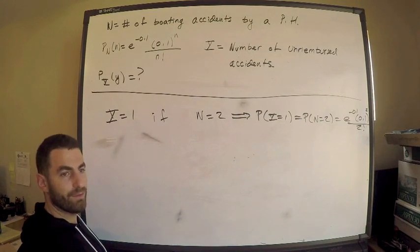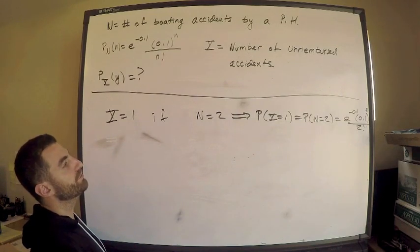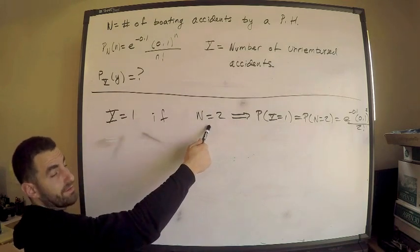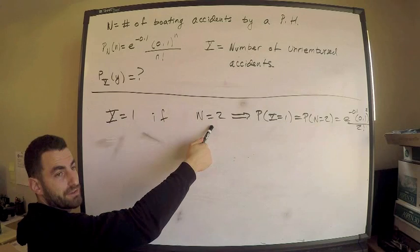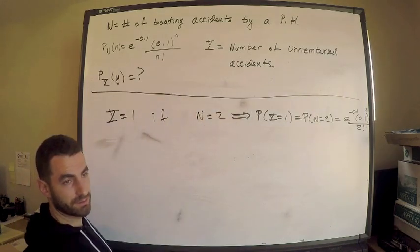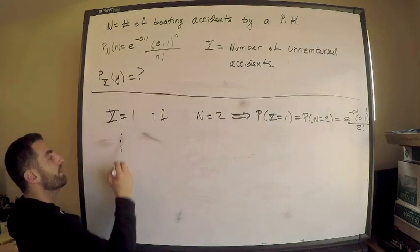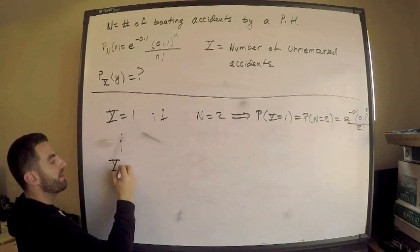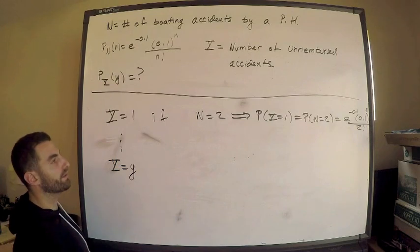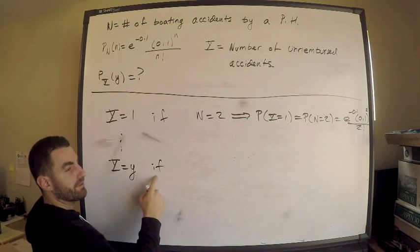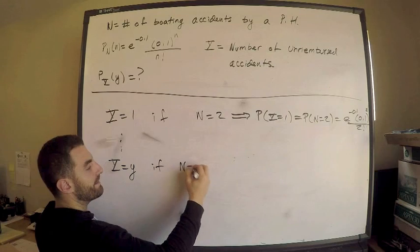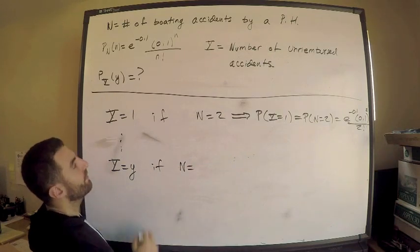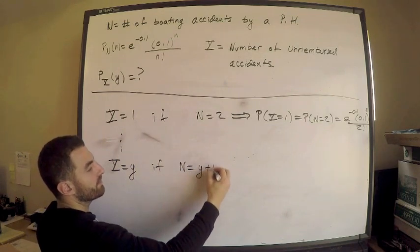So go ahead and try when Y is equal to two. If Y is equal to two, if there are two unreimbursed accidents, convince yourself this means that N is three. Insurance pays for the first one, you pay for the other two. So hopefully you're seeing a pattern. What if Y just equals some generic value like little y? This is if N is equal to what? Well, hopefully you're seeing the pattern. This is always going to go up by one, so this is Y plus one.